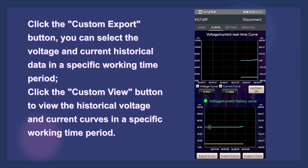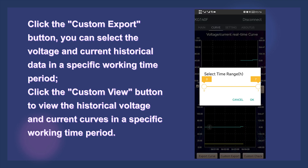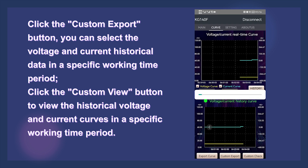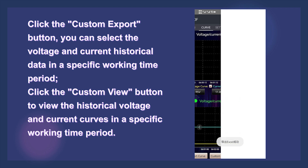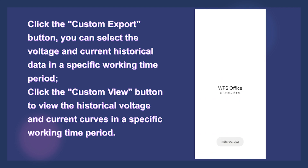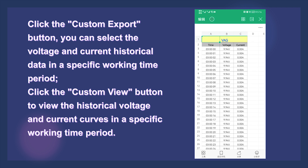Let's look at the functions of the other two buttons. Click the custom export button to select the voltage and current historical data in a specific working time period. Click the custom view button to view the historical voltage and current curves in a specific working time period.